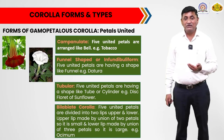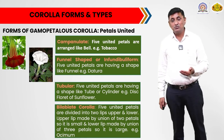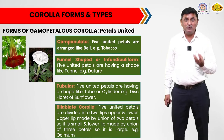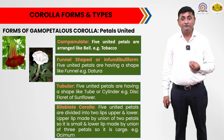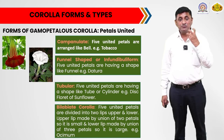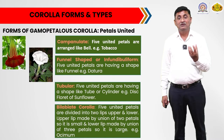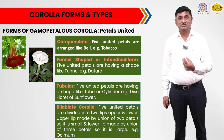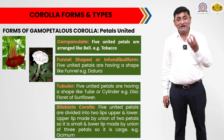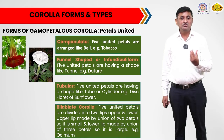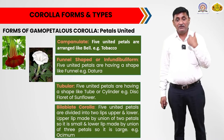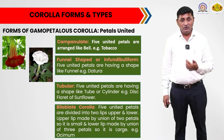The next type of gamopetalous corolla form is funnel-shaped or infundibuliform corolla. Here also there are five petals, they are united and their union forms a funnel-shaped structure. When the corolla is united and the flower blooms, you will see a funnel-shaped structure. You can see in the image, the flower of datura is there and the shape is looking like a funnel. So this form of gamopetalous corolla is considered the funnel-shaped or infundibuliform corolla.